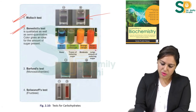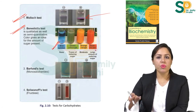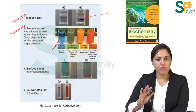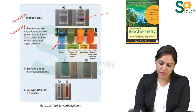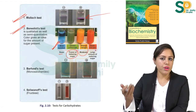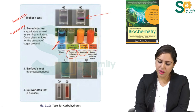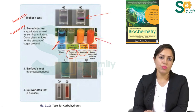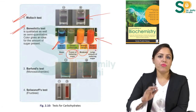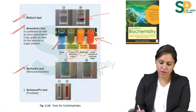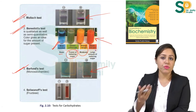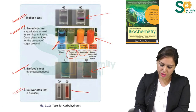If the blue Benedict solution remains blue after boiling, it means no sugar is present. If green, then traces are present. If orange, then a moderate amount is present. If brick red precipitates form, then a large amount of sugar is present in the sample. So Benedict's test gives an idea of the quantity of sugar.